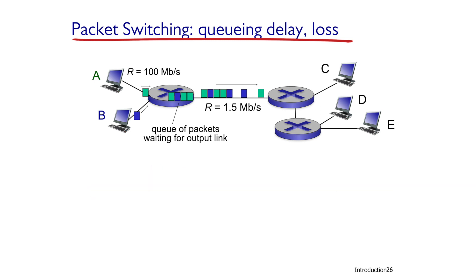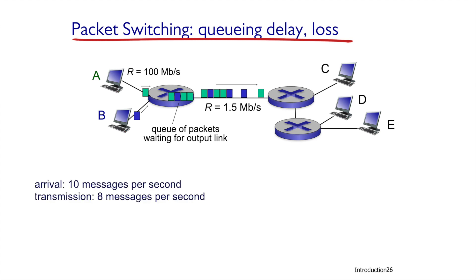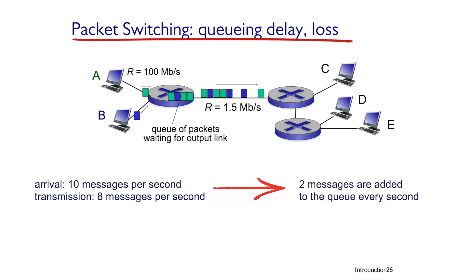For example, let's say that at each second 10 messages arrive, but only 8 are transmitted. In this situation, every second 2 messages are added to the queue. If we assume that the queue size is 20 and the messages keep coming at the same rate, then after 10 seconds the queue will fill entirely and excess messages arriving afterward won't be saved.